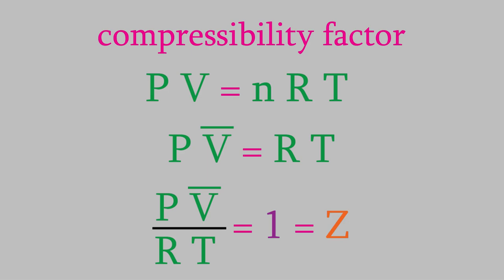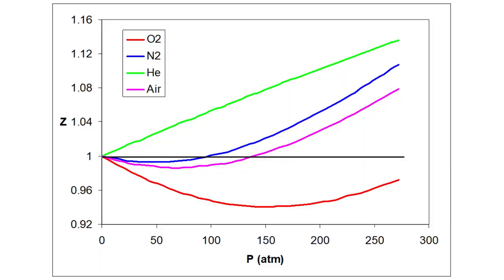The important thing to notice about this equation is that, according to the ideal gas law, this fraction should always be equal to 1. But how does that compare to reality? If we plot z for several different gases as we increase the pressure, the horizontal line here is the prediction that the ideal gas law makes. The ideal gas law predicts that z should always be equal to 1.